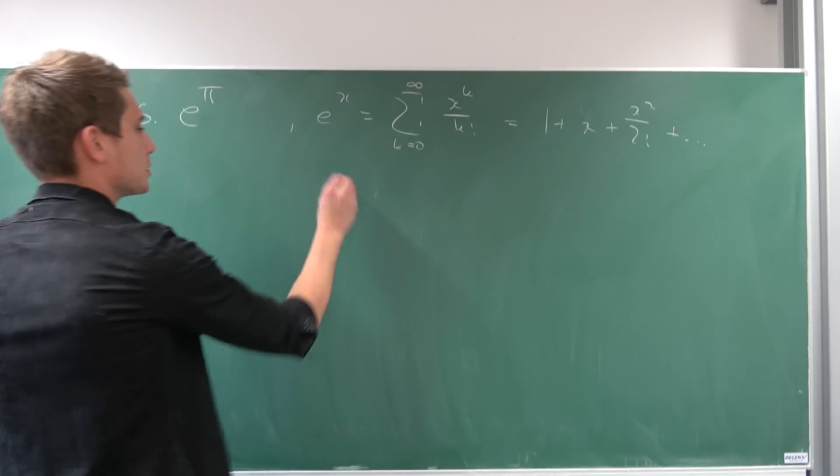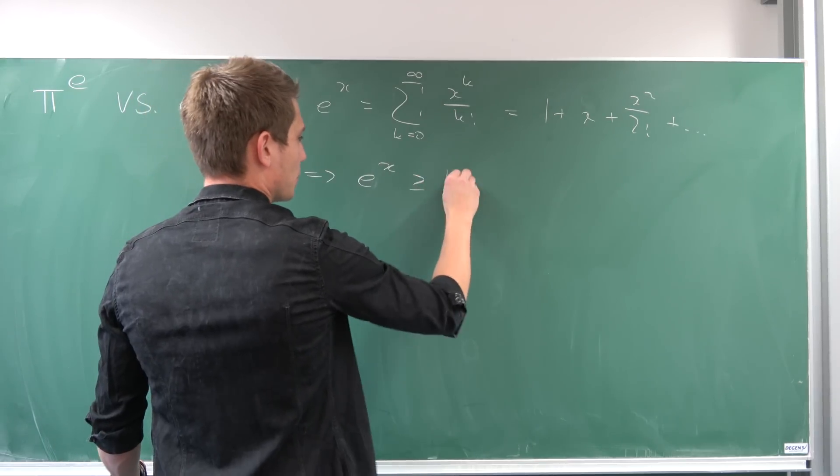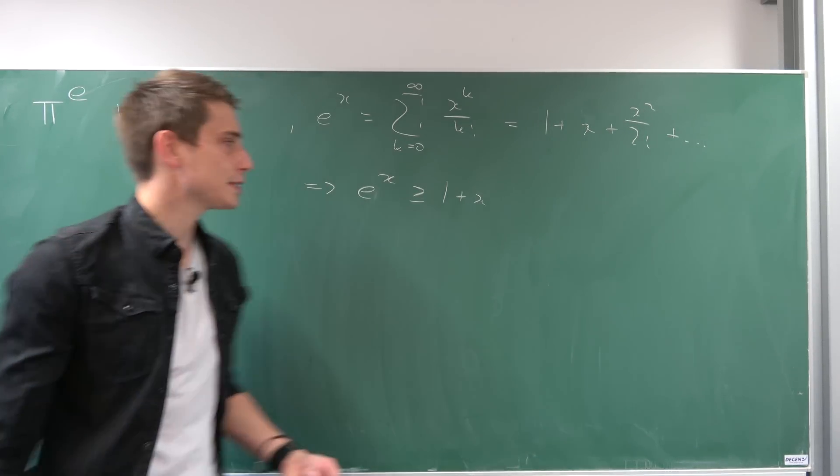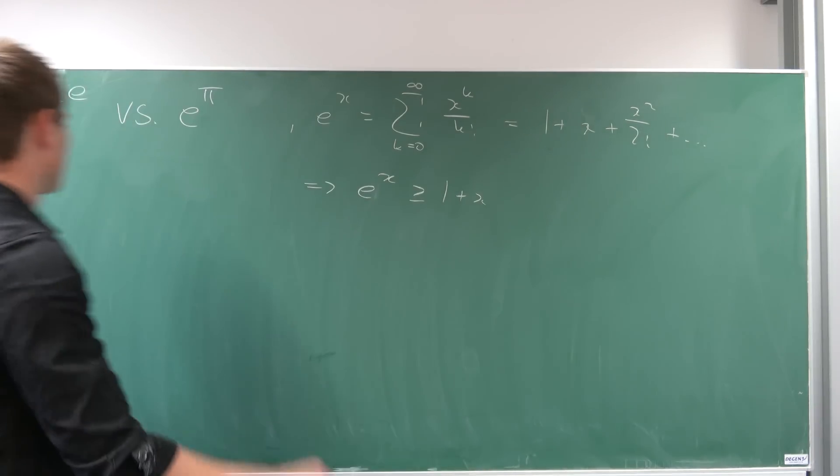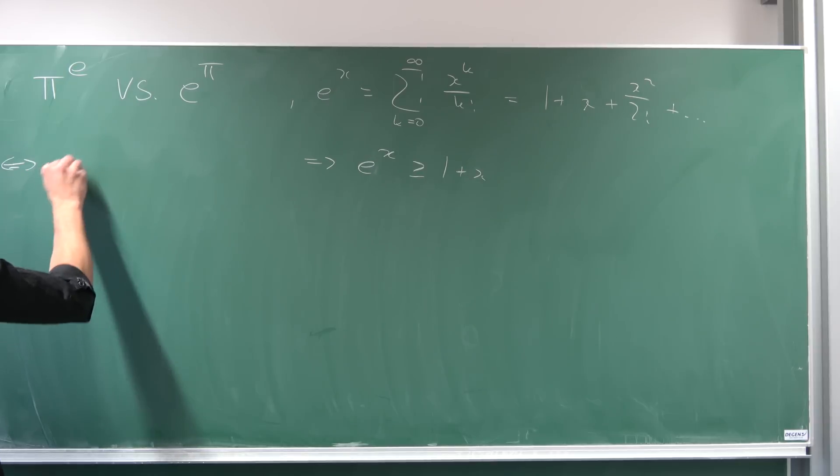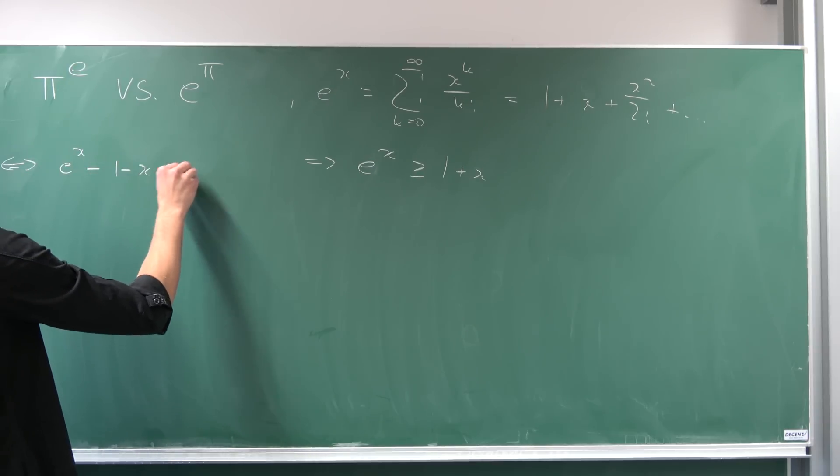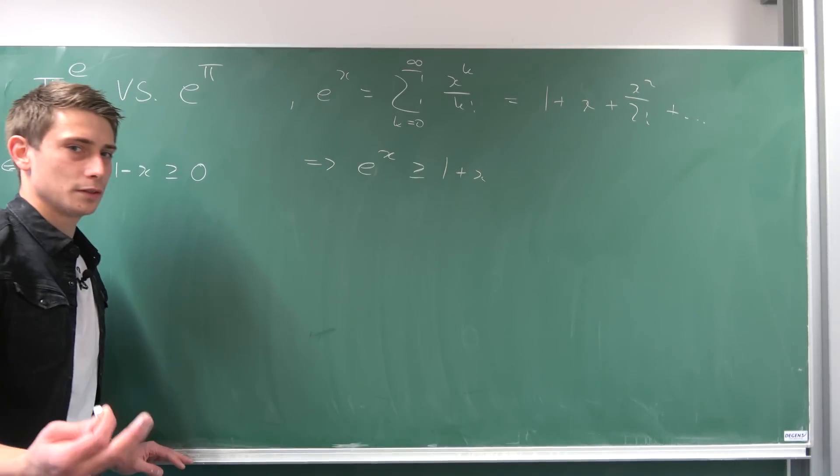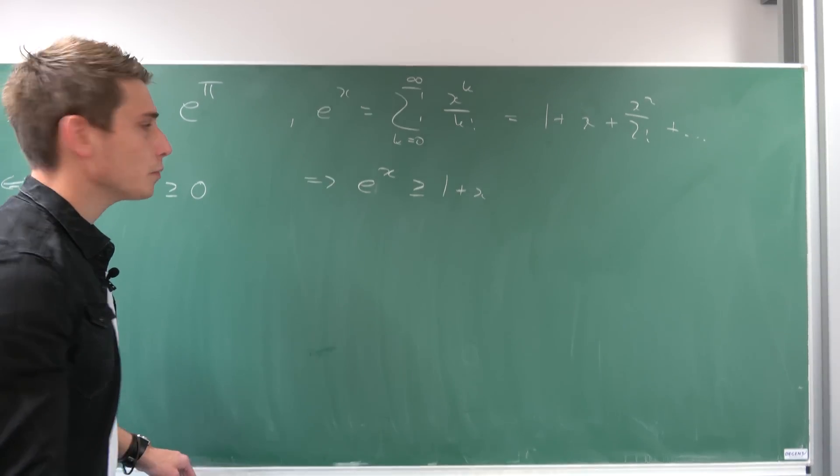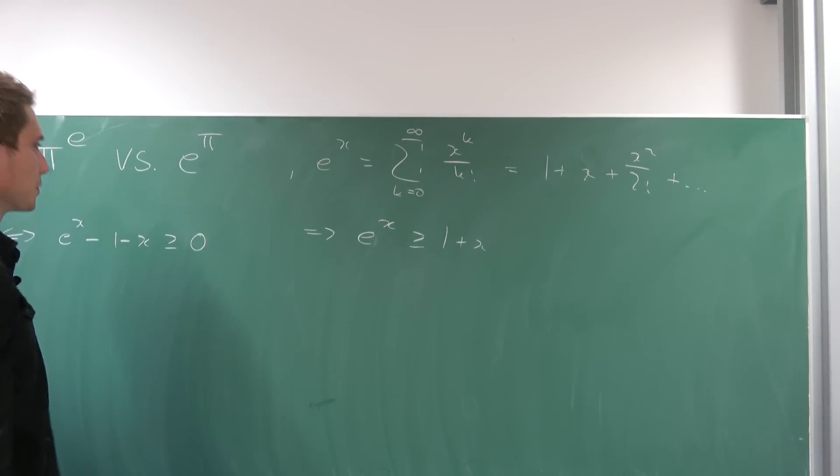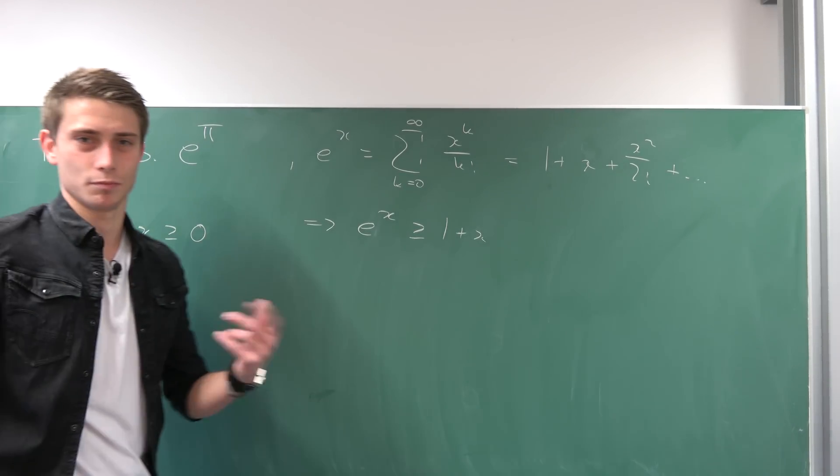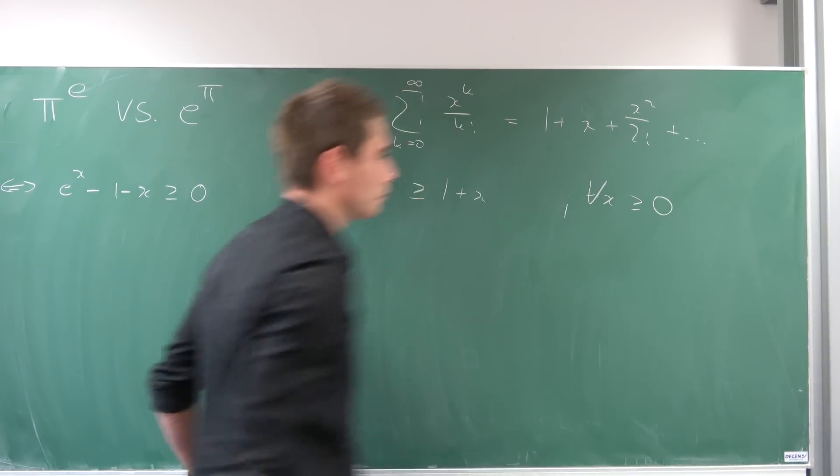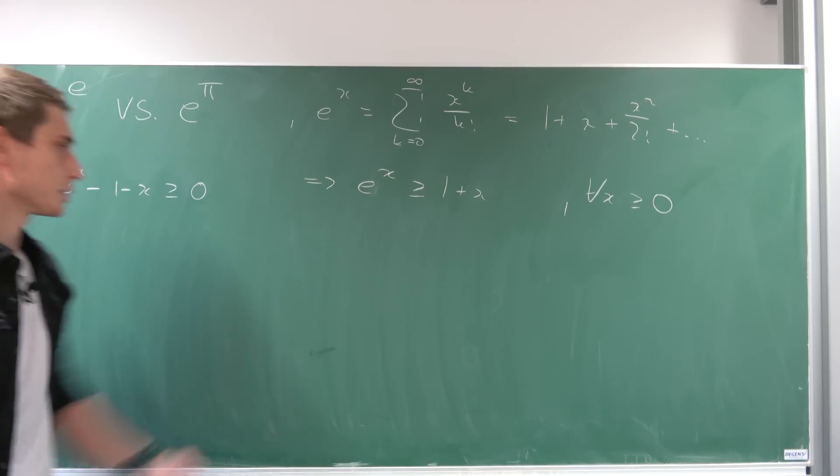And what we want to show at first today is that e^x is greater or equal to 1 + x. Just for intuition purposes we are going to subtract this term on both sides. That's equivalent to saying we have e^x - 1 - x is greater or equal to zero. But since π and e are both strictly positive, why not just restrict it to for all x greater or equal to zero. We want to show that this holds right here for those x values.